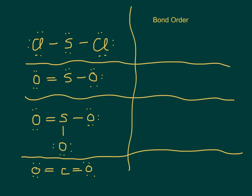So this first one, if you notice, it's all single bonds. Another way of saying all single bonds is to say that the bond order is one. It's just another way of saying it's all single bonds.